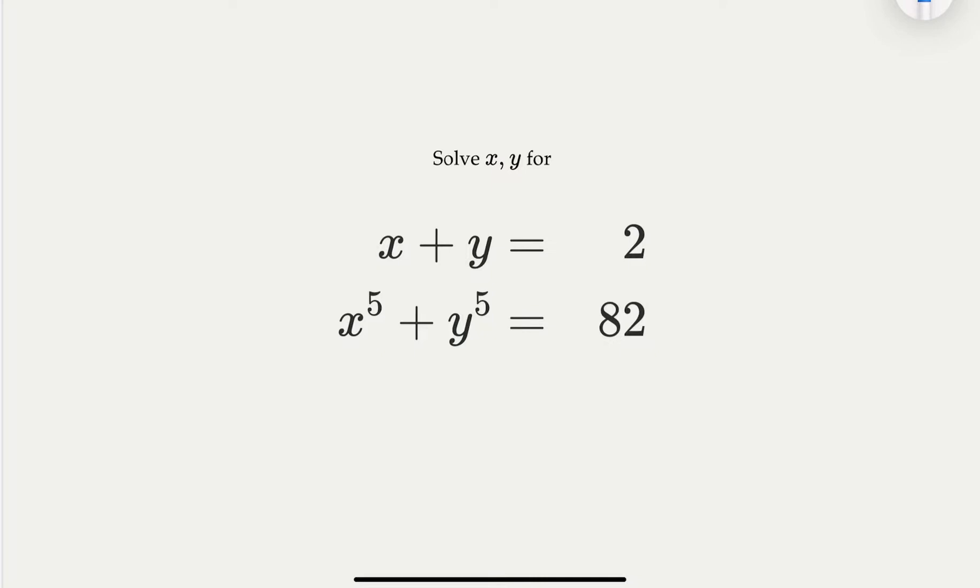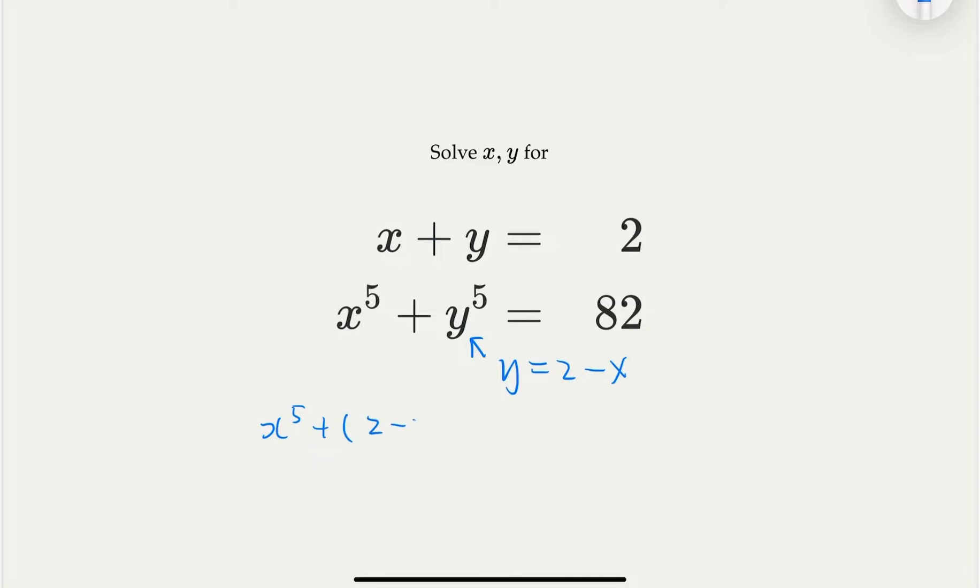So for example, y in this case will equal 2 minus x, and then plugging y into the second equation, you're going to get x to the fifth power plus 2 minus x to the fifth power equal 82.